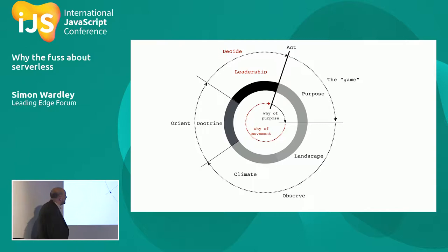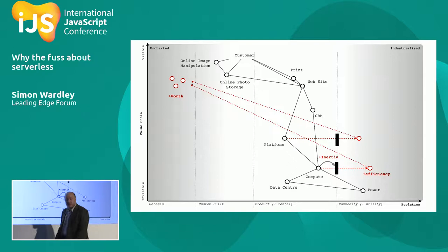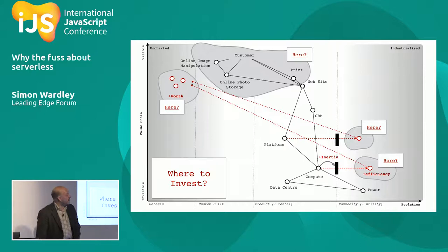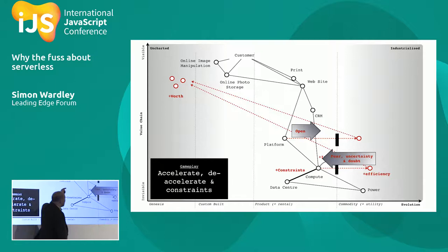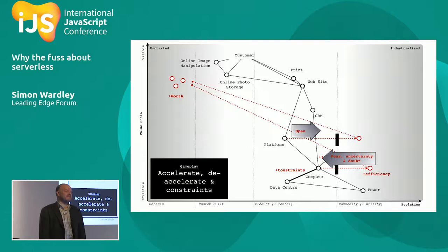Now we understand our purpose, landscape, and climate — we're using that for anticipation, we're learning about doctrine — and we finally get to gameplay: where can I attack and how can I manipulate the market? This is about context-specific forms of gameplay. You've got a map, you anticipate where it's going, you can invest in multiple places, and you can manipulate the market — using open approaches to accelerate things to commodity, slowing it down with fear, uncertainty and doubt, using constraints. There are about 70 different ways of manipulating a market.